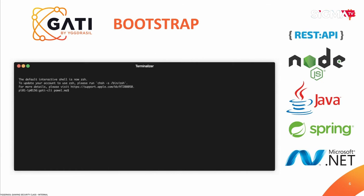Communication between GATI and the GATI game server is based on REST API, so as I mentioned you can integrate pretty much any technology. But if you want to use Node.js, Java Spring, or .NET, we also provide you with scaffolding of initial applications, so you can generate stub methods and start implementing your game immediately. This is optional but it's a nice way to start quickly.